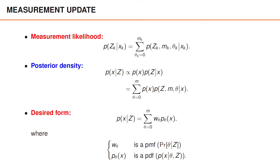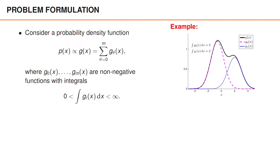Three things are important to note here. First, we now have an equality between the posterior and the summation, instead of a proportionality sign. Second, the weight w_theta is a probability mass function as a function of theta, which means that it is non-negative and sums to 1. Third, p_theta of x is a probability density function as a function of x, which means that it is non-negative and integrates to 1. We will see in the next video that w_theta is the probability of the data association theta, and p_theta of x is the posterior of x given that theta is the true data association.